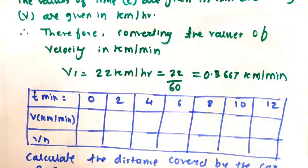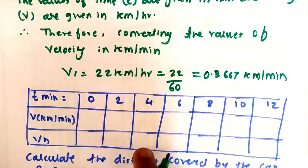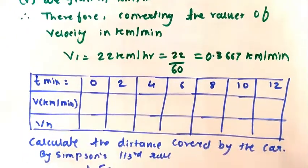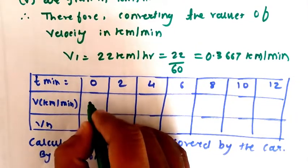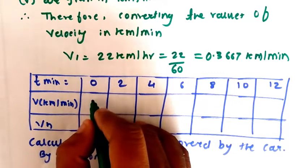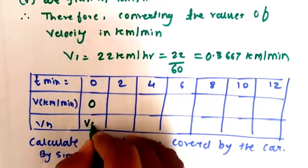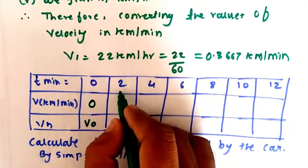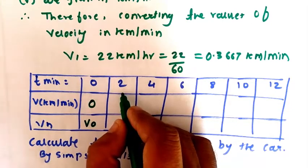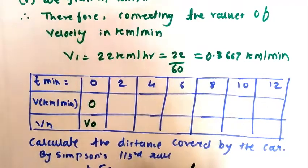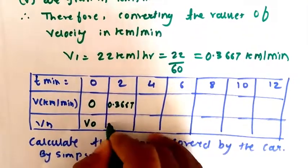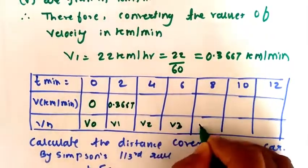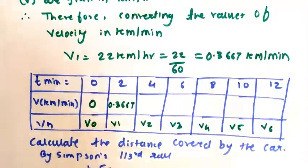So similarly, you have to find the value for v2, v3, v4 up to v6. In this table, you have to put the values. First of all, when time is 0, v in kilometer per minute will be also equal to 0, and this is v0. For time 2 interval, velocity was 22 kilometers per hour. So you have to convert into minute, that is 0.3667. So this is v1, v2, v3, v4, v5, and v6. Find out all the values.